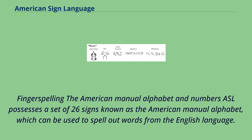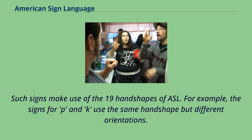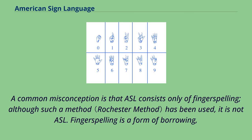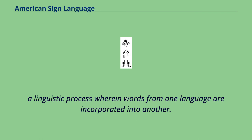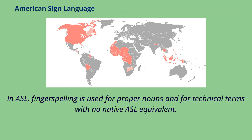ASL possesses a set of 26 signs known as the American Manual Alphabet, which can be used to spell out words from the English language. Such signs make use of the 19 handshapes of ASL; for example, the signs for P and K use the same handshape but different orientations. A common misconception is that ASL consists only of fingerspelling. Fingerspelling is a form of borrowing, a linguistic process wherein words from one language are incorporated into another. In ASL, fingerspelling is used for proper nouns and for technical terms with no native ASL equivalent.